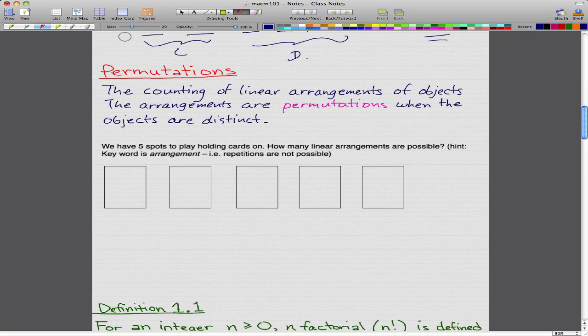We're back on discrete mathematics, and in this video we're going to do permutations. Permutations is the counting of linear arrangements of objects, and these arrangements are called permutations when the objects are distinct.